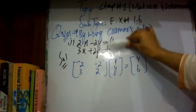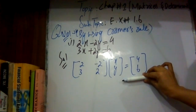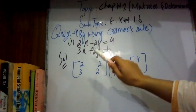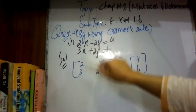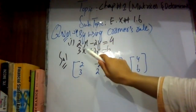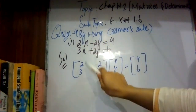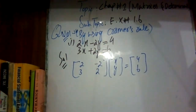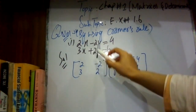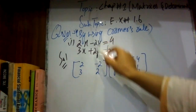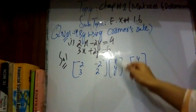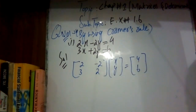When we write down these equations in matrix form, the procedure is: the first column contains the x coefficients. In the first equation the x coefficient is 2, and in the second equation it is 3. The second column contains the y coefficients — minus 2 and 2. Then write down the unknown variables x and y.